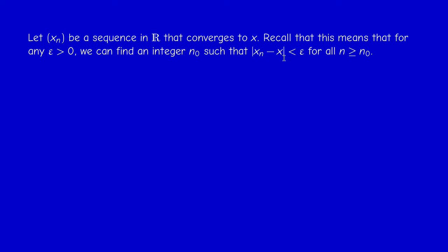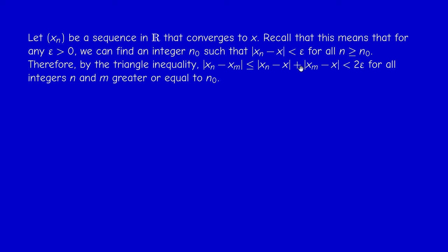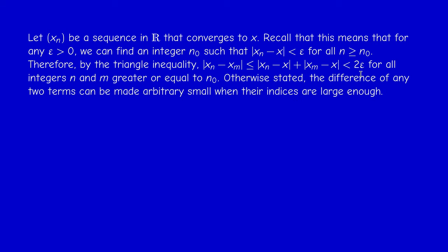Suppose the sequence converges to X. If epsilon is given as the accuracy of approximation, then starting from a certain rank N_0 we have |X_n - X| < ε and |X_m - X| < ε for n, m ≥ N_0. By the triangle inequality, the distance between any two terms for large indices can be made less than 2ε. Since epsilon is arbitrary, 2ε is also arbitrary.